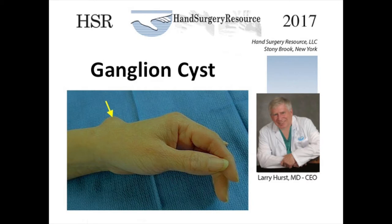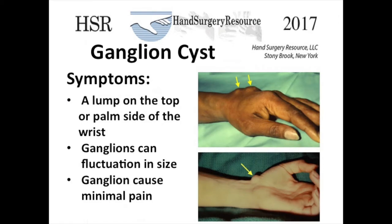In this clinical photo, the arrow is pointing to a large ganglion in the dorsum of the left wrist. A patient with a ganglion typically complains that he or she has a lump on the dorsum of the wrist. Some patients are concerned that the lump is cancer. However, ganglion cysts are benign. Ganglions often slowly enlarge but can get smaller and enlarge again.